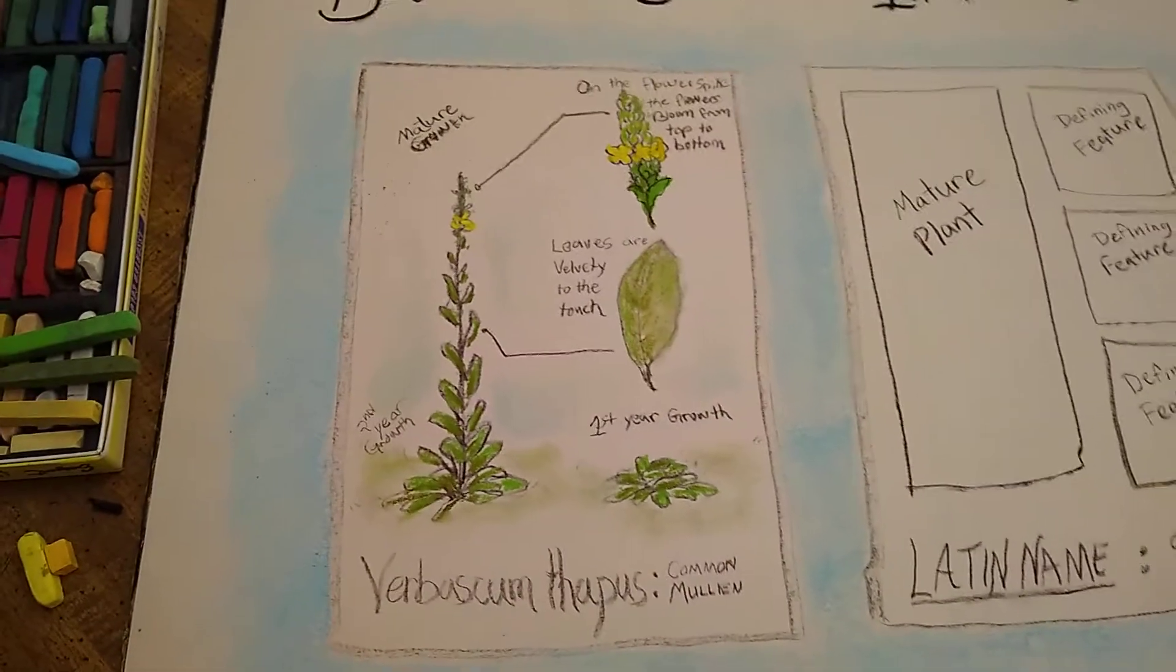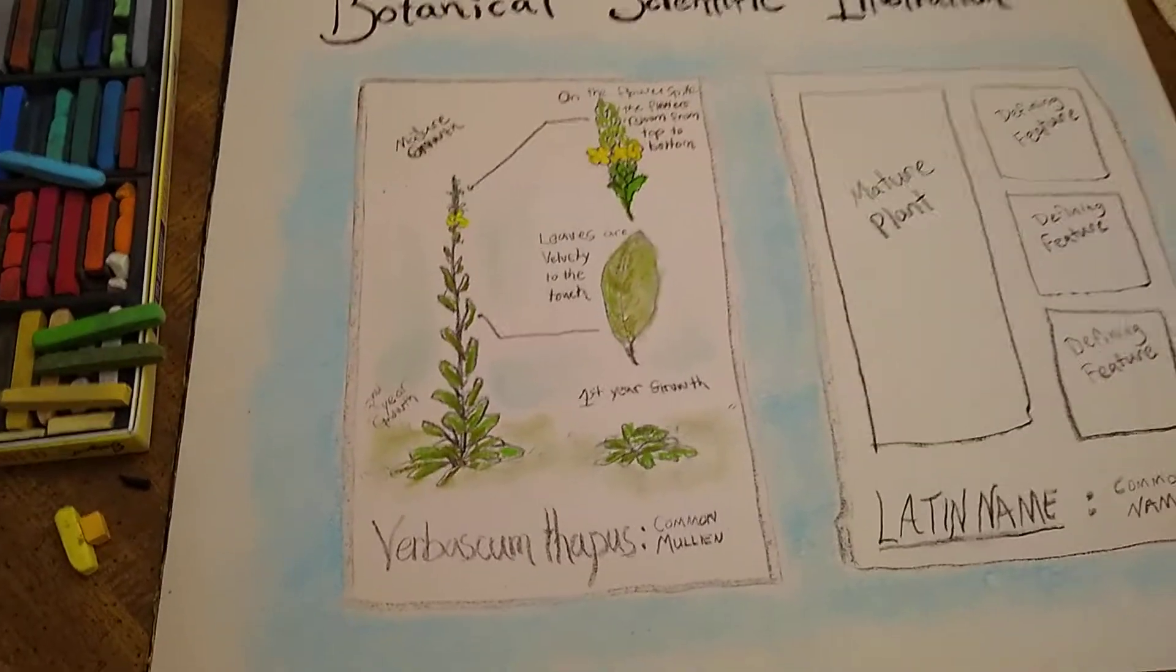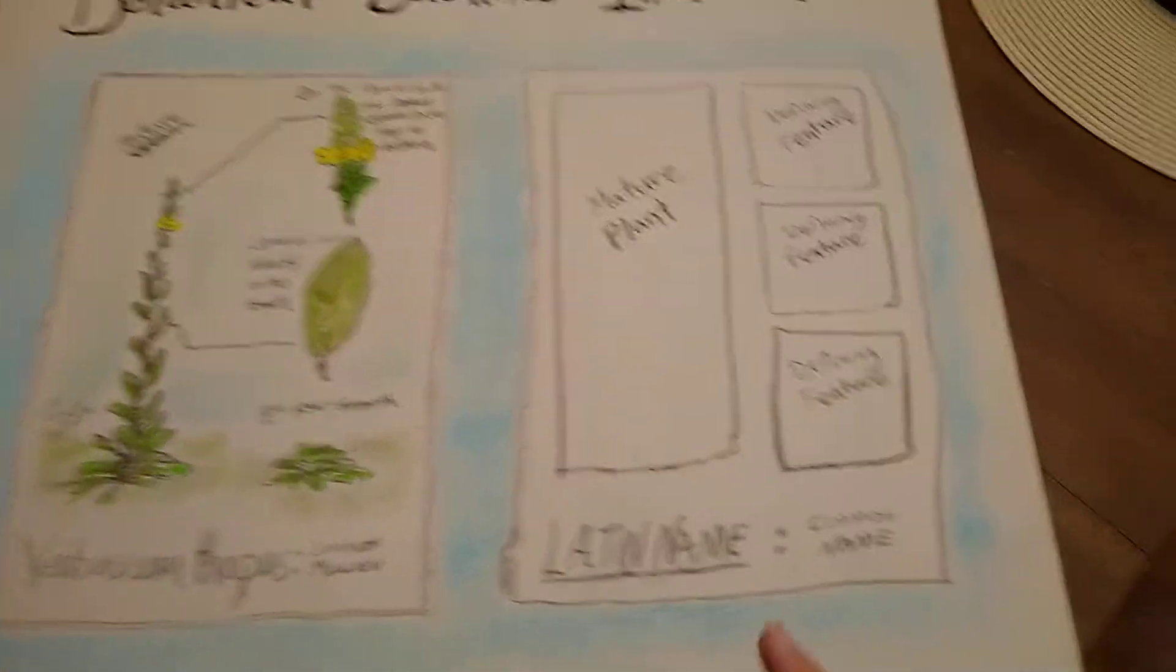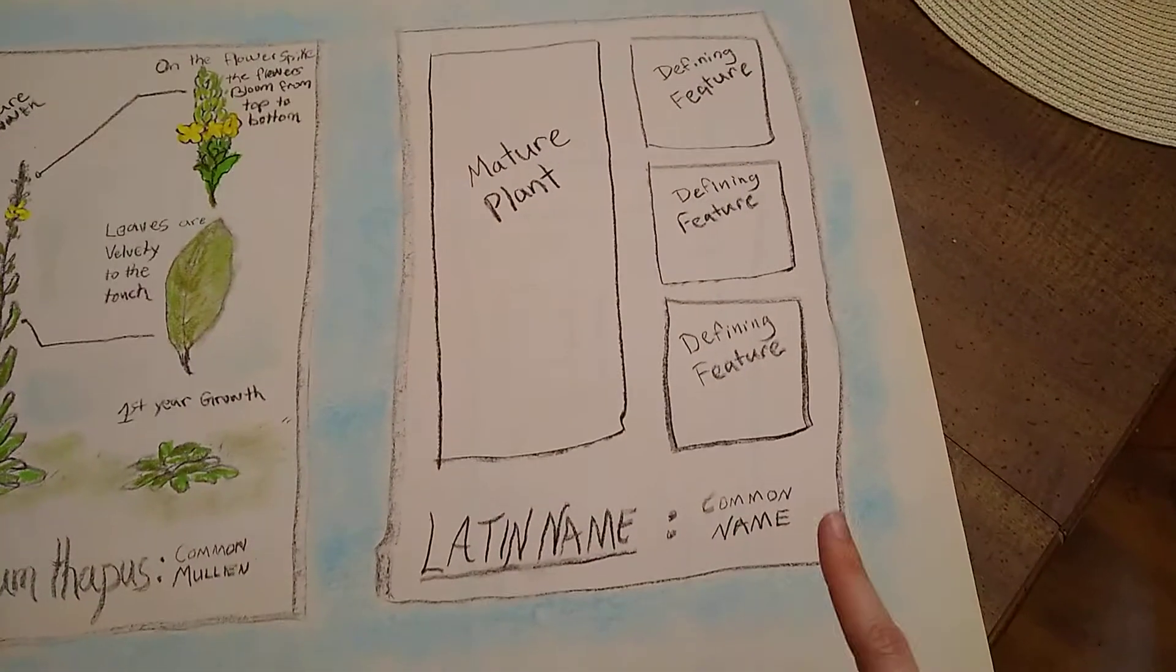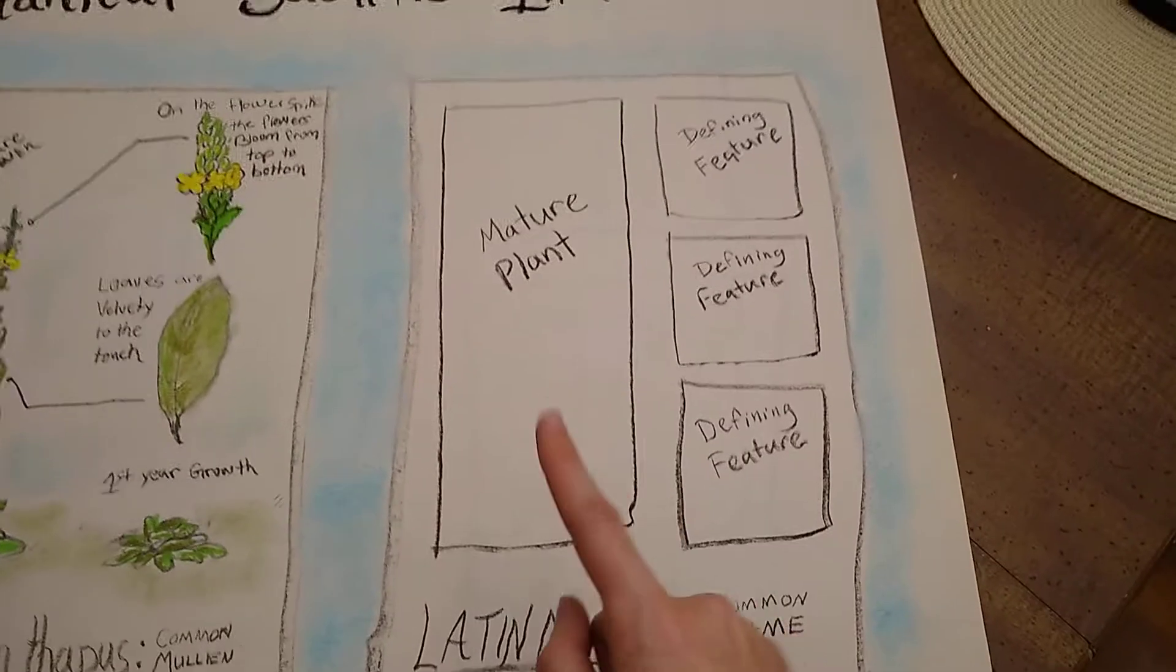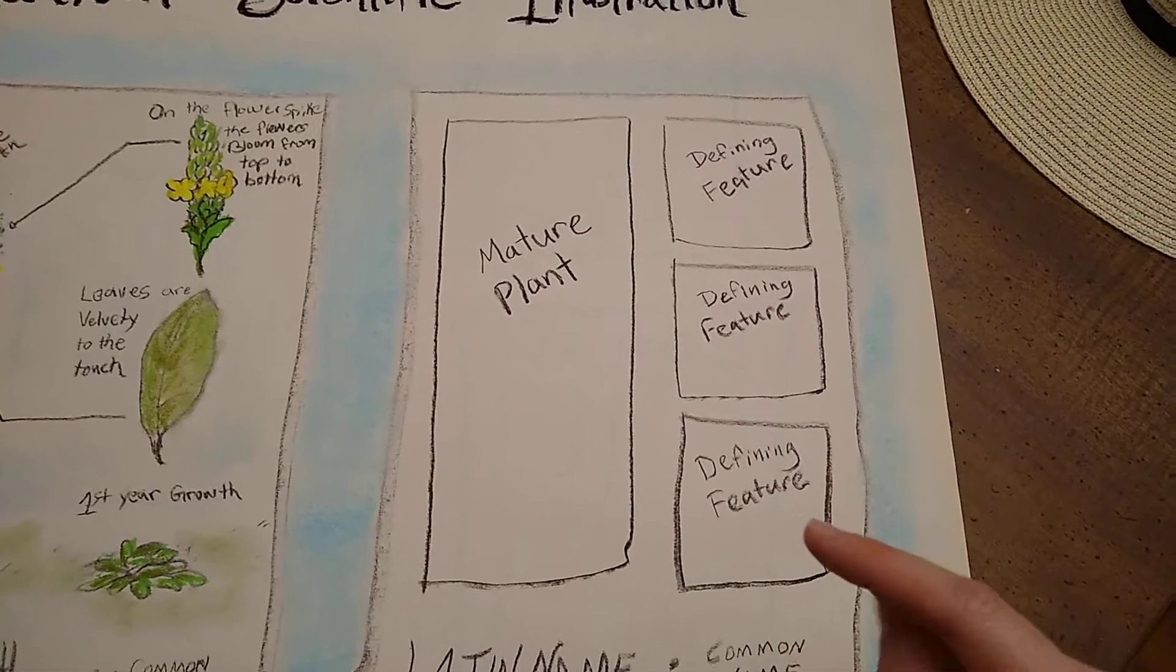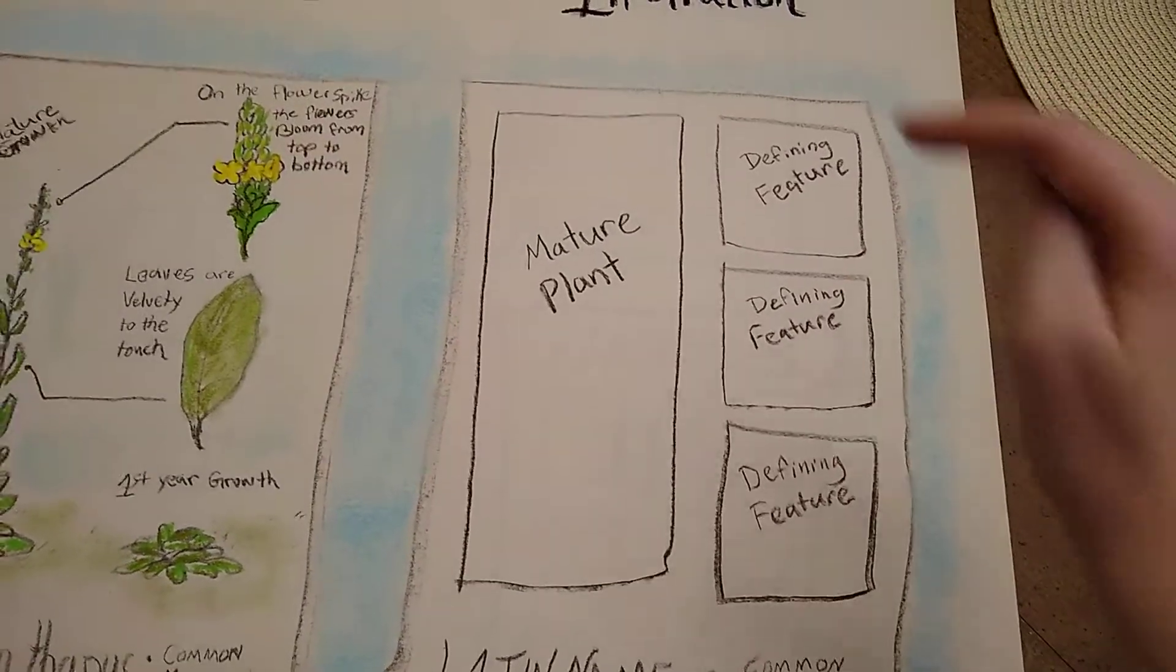This is the basic structure of a scientific illustration. We've got the latin name, the common name, a picture of the mature plant, and some defining features on the side.